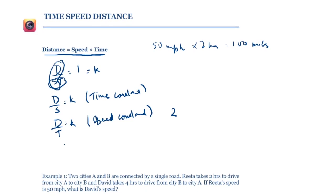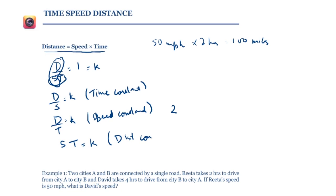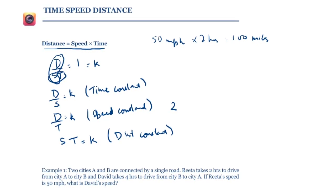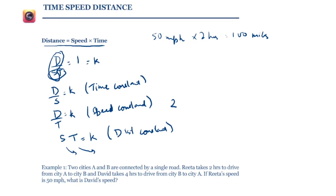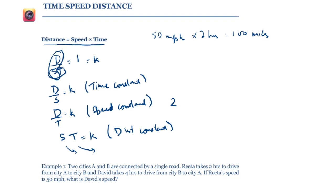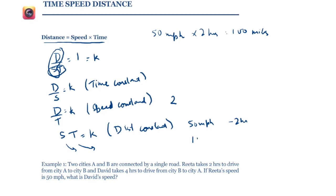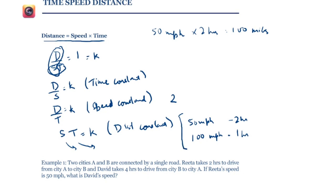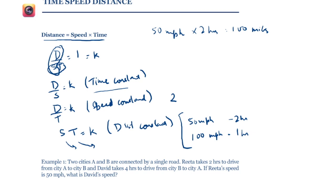Another relation is s·t = k when distance is constant. This is used quite often. If you and I cover the same distance and my speed is half of yours, then the time I take will be twice yours. For example, for 100 miles at 50 mph I take two hours, whereas at 100 mph you take only one hour. Note that the third variable must stay constant in each of these cases.